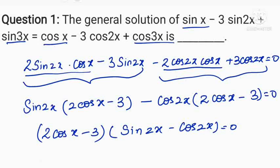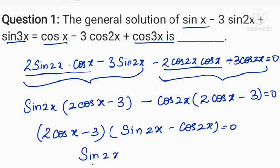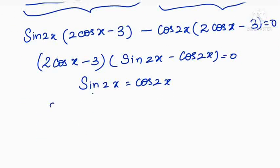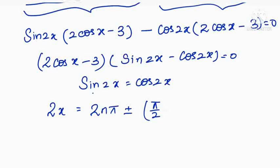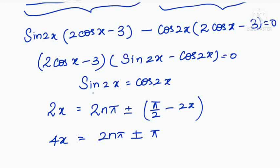So it simplifies to sin 2x equals cos 2x, which implies 2x equals 2nπ plus or minus π/2 minus 2x. Therefore, we can write x as nπ/2 plus or minus π/8. This is the general solution.